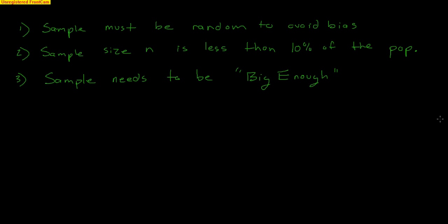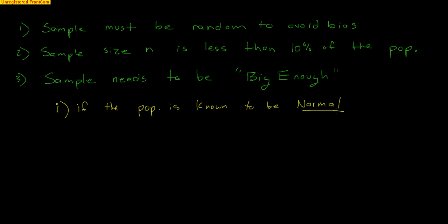The third condition is that the sample needs to be big enough. However, to verify this condition, there are a couple of things to check. When working with proportions, you may remember the 10 successes and 10 failures condition — but with means, there's no such thing as a success or failure. So we have two cases: if the population is known to be normal, then the sample size can be anything — n can be any value, even as small as 5, 6, or 10.